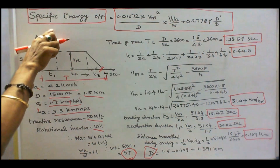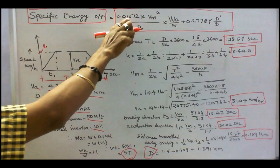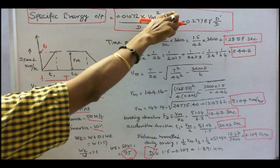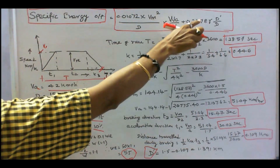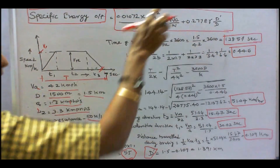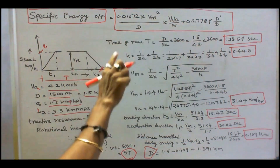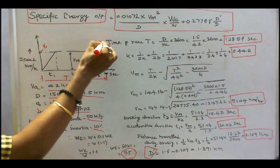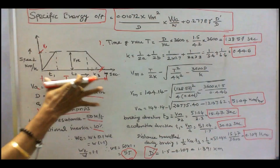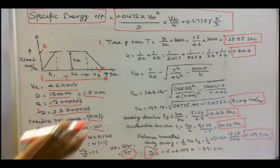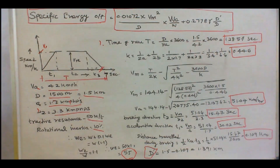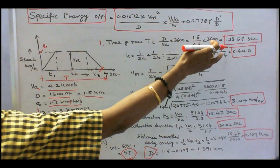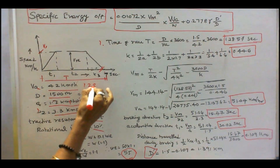The specific energy output formula is: 0.01072 × Vm² / D × (accelerating weight / dead weight) + 0.2778 × train resistance R × D' / D, where D' equals total distance D minus distance travelled during braking. First, we find total time T = T1 + T2 + T3 = D / Va × 3600. With D = 1.5 and Va = 42, T equals 128.57 seconds.